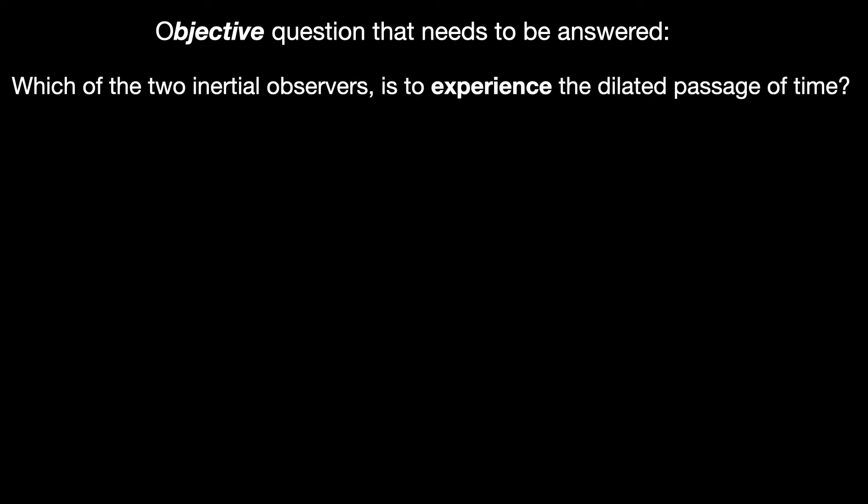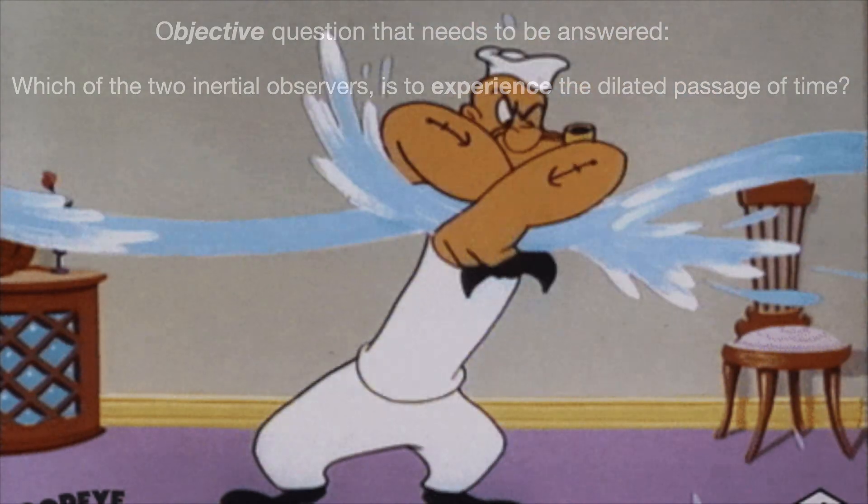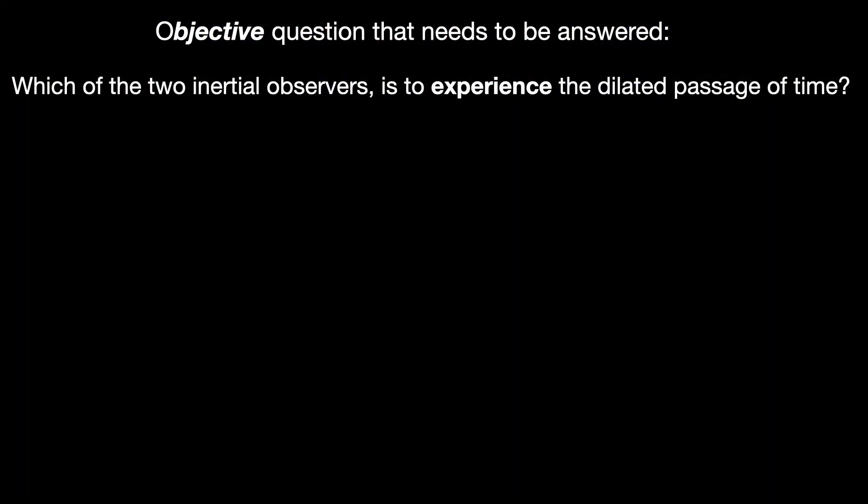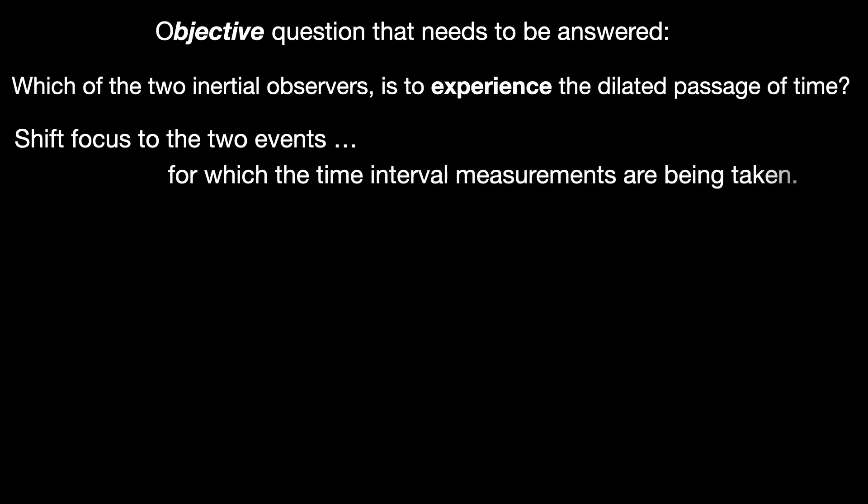So, how do we resolve this? The question we need to settle objectively is in which frame of the two should the time interval between events 1 and 2 read more? That is, which of the two inertial observers is to experience the dilated passage of time? We can decide this if we can somehow break the equivalent status of the two inertial observers S0 and S' in context of our example. That can be done if we shift our focus to the pair of events between which the time interval measurements are being carried out.